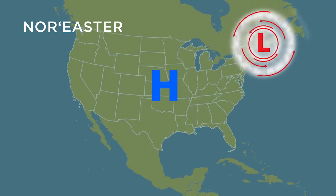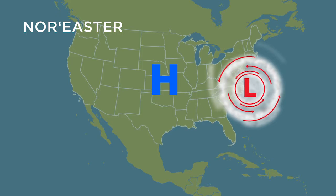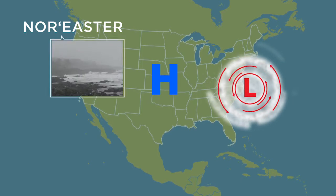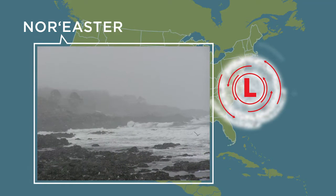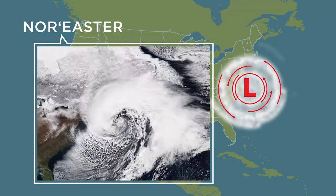This nor'easter spread from Canada to Virginia. The wind conditions in a nor'easter vary from other cyclonic events, too. Hurricanes and tornadoes have their fastest winds at the surface, but the fastest winds in a nor'easter are high in the jet stream.